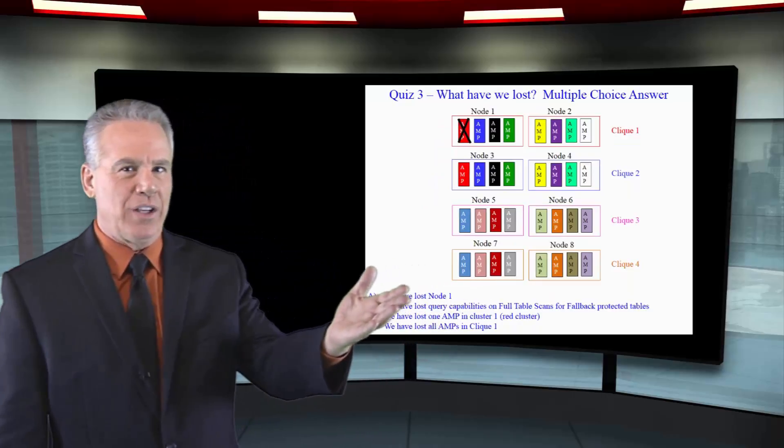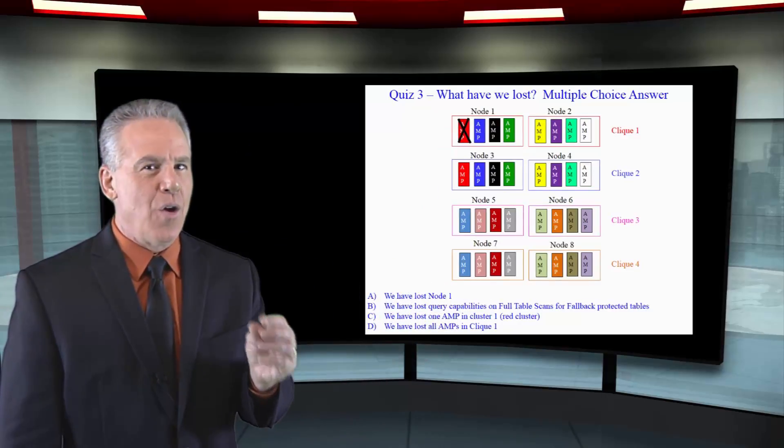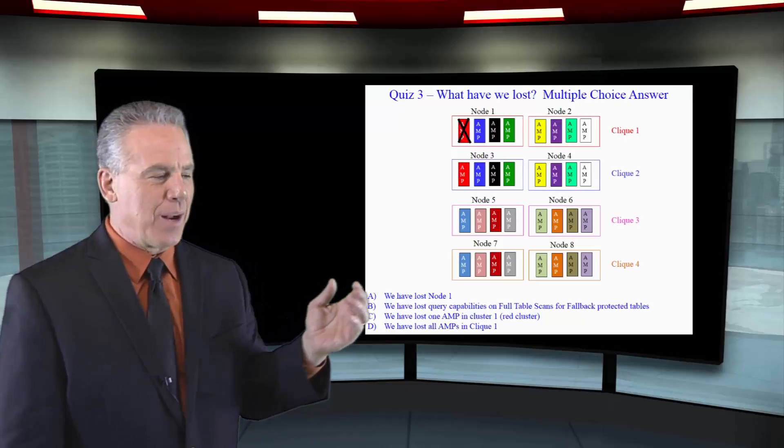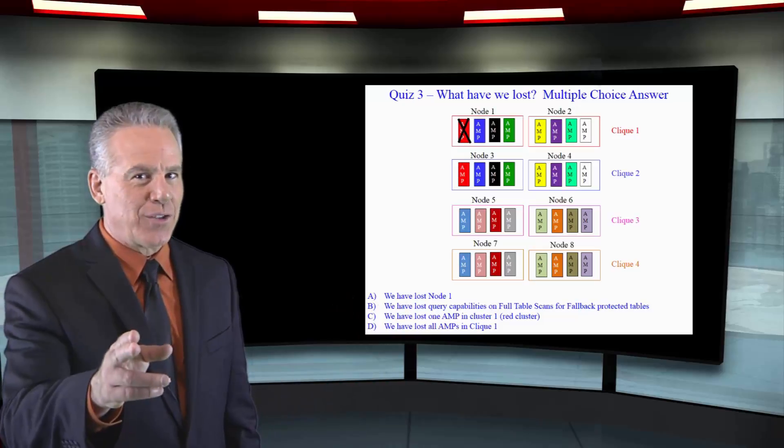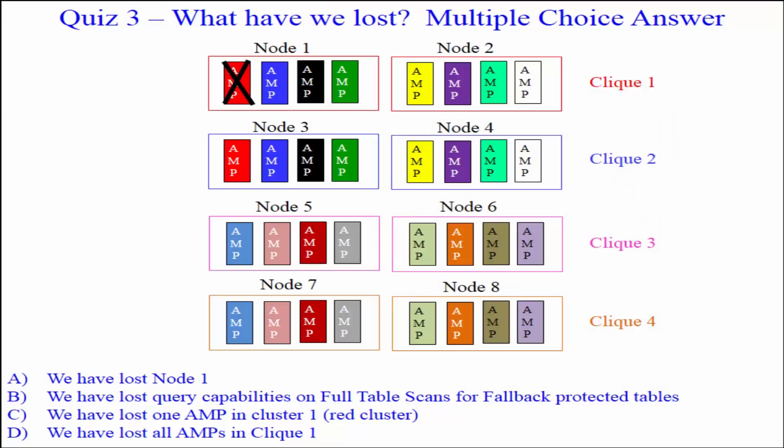Take a look at this picture and tell me what we've lost. I've got a multiple choice question here for you. I'll read it to you. You think about it. Get your answer ready. Answer A: We have lost node 1. Answer B: We have lost query capabilities on full table scans for fallback protected tables. Answer C: We have lost one AMP in cluster 1. And D: We have lost all AMPs in clique 1.